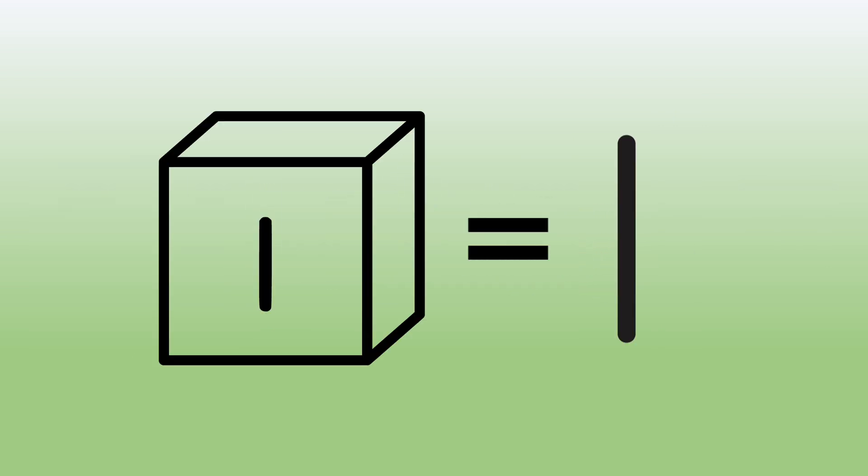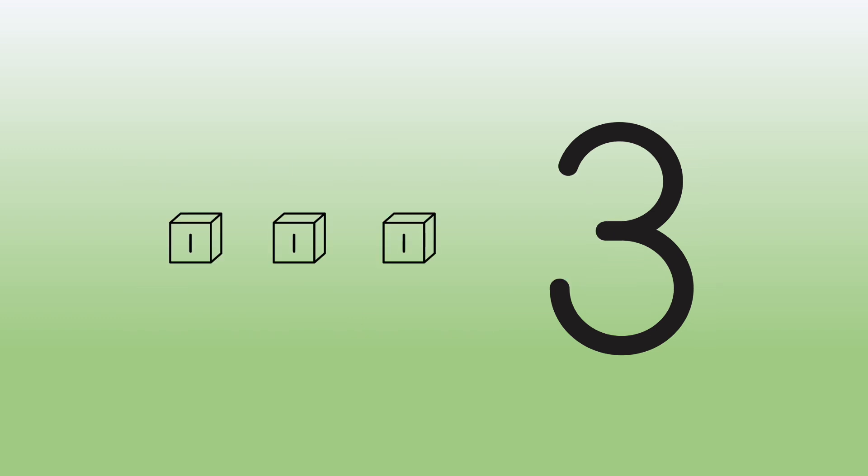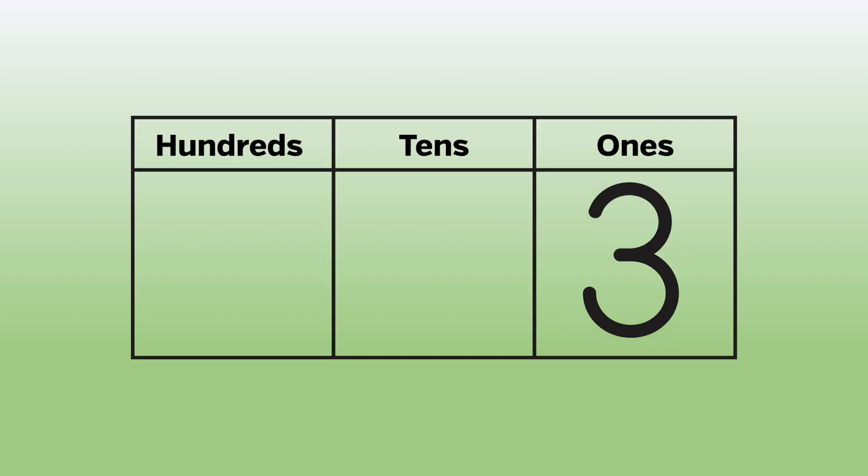Each bit is a one. Five bits is five. Eight bits is eight. Three bits is three. When we look at a place value chart, numbers shown by bits are placed in the ones place.